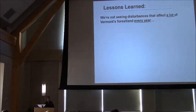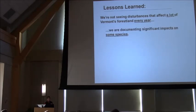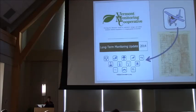So lessons learned, we're not seeing disturbances that affect a lot of Vermont's forest land every year. There's no ecosystem collapse going on here, but we are documenting significant impacts on some of the species. Lesson I learned, yes, you can analyze these data. And there's probably a lot of information that's yet to be discovered in the maps we haven't archived yet. So that's the view from the air, and enjoy the rest of your day, and I guess we're going down to the ground next. Thank you.